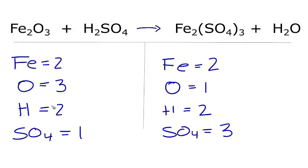Let's leave the oxygens till last, and let's fix the SO4s first. So I have three here and one here. If I put a three, I know that this one times the three, that will give me three. So now my SO4s are balanced.